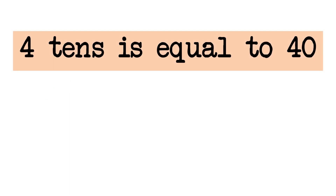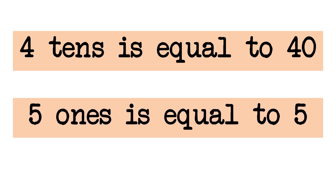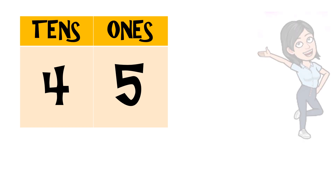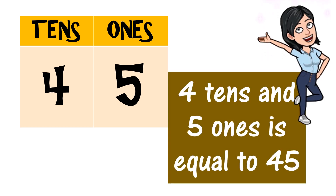Four tens is equal to forty, and five ones is equal to five. Now, let us put four and five in a place value chart. Four tens and five ones is equal to forty-five.